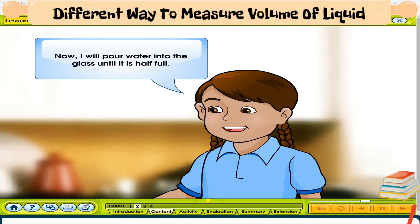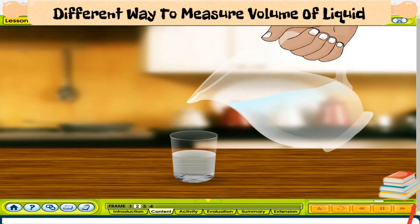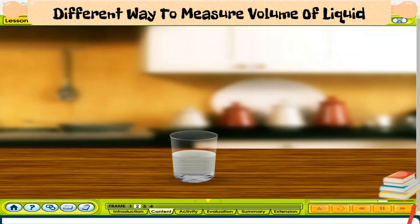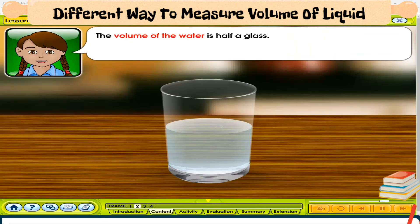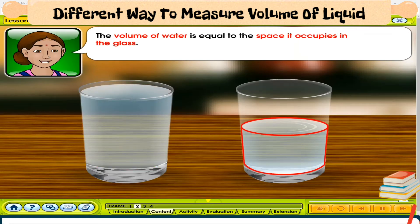Now, I will pour water into the glass until it is half full. The volume of the water is half a glass. The volume of water is equal to the space it occupies in the glass.